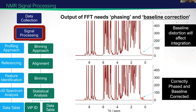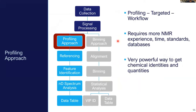We then need to do a baseline correction — removing systematic distortion in our noise that offsets it from zero. This is crucial if you want accurate quantification. We press a button and apply the proposed solution. In an idealized case we have a nice flat baseline, nicely phased signals, and the data looks really good. At this point, our profiling approach and binning approach diverge.